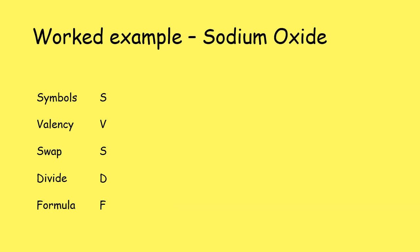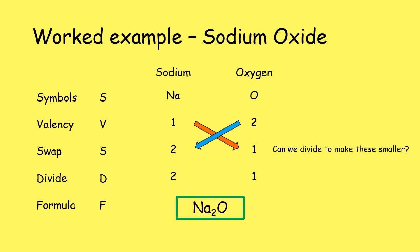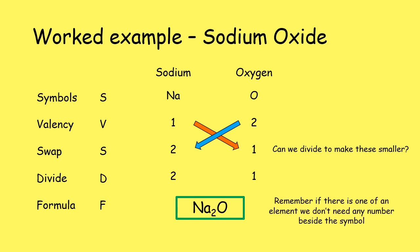Another example: sodium oxide. Symbols are Na and O. Sodium is in group one, valency of one; oxygen is in group six, valency of two. When we swap the numbers, sodium now has a two underneath it and oxygen has a one. Can we divide to make these numbers smaller? We cannot, so we keep two and one. Writing the formula: Na₂ because there are two sodiums, and O with no number because there is only one oxygen. So the formula is Na₂O.